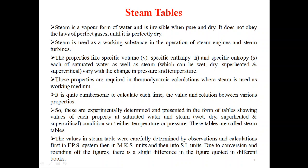It is quite cumbersome to calculate each time the values and relations between various properties. So these are experimentally determined and presented in the form of tables showing values of each property for saturated water and steam — which can be wet, dry, superheated, and supercritical — with respect to either temperature or pressure. These tables are called steam tables.